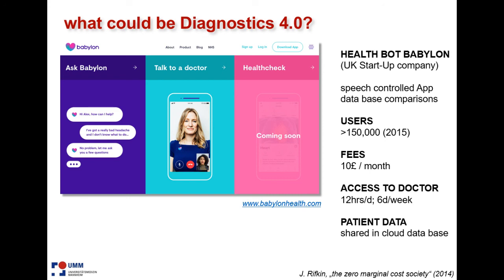You are entitled to talk to a doctor for 12 hours a day on six days in the week, and you can have health checks being offered. For seven to ten pounds a month, you are entitled to this service, and in return, you give your data in aggregated and anonymized form to the network — making this system much more effective as it goes.